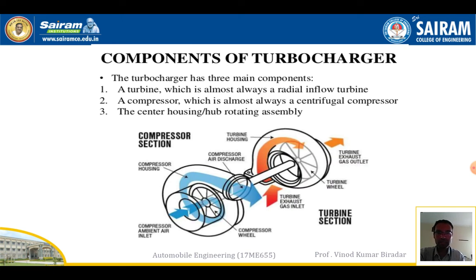Here is the complete diagram for the turbocharger. There are three main components: first, the turbine; second, the compressor; and third, the center housing, which is the hub rotating assembly. The turbine is almost always a radial inflow turbine, and the compressor is almost always a centrifugal compressor. The center housing is the rotating part of the turbine.